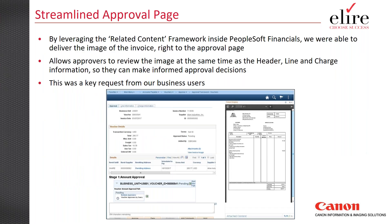We achieved just under three days total approval time on vouchers, and people received invoices much faster because they were routed to the right people. One of the key reasons we like the Canon solution is that it delivers the invoice image directly into what's called the Related Content Framework inside PeopleSoft — a big request from business users who wanted to see voucher data on one side of the screen and the invoice image on the other side.